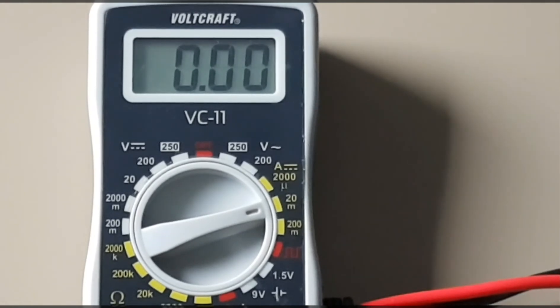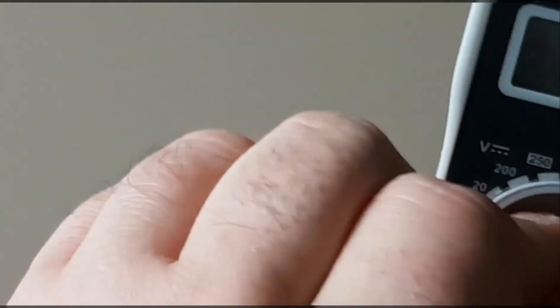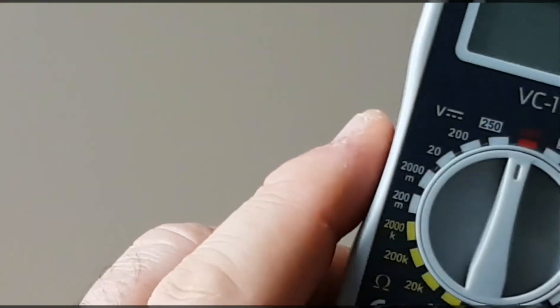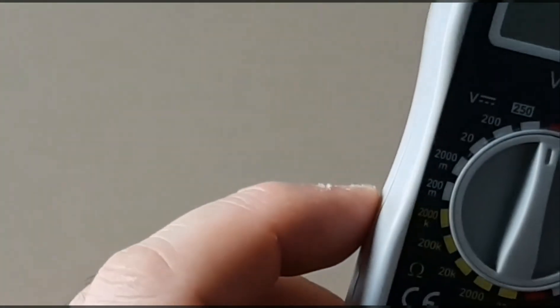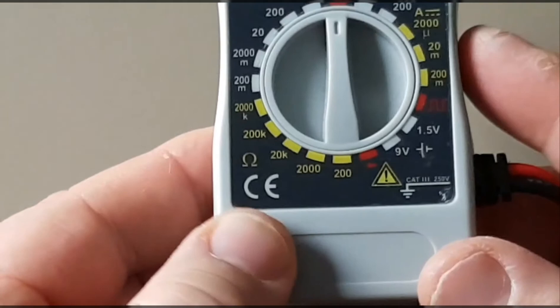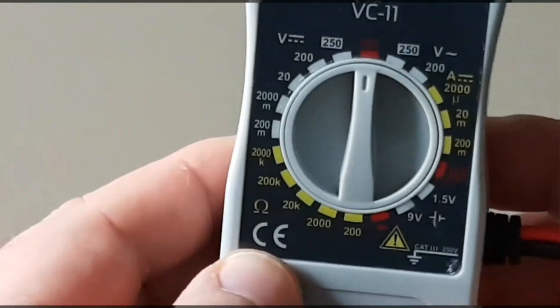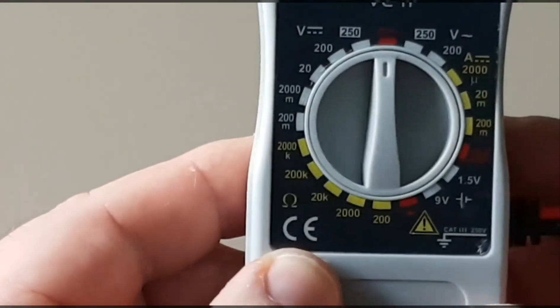Now the Voltcraft VC11 also does direct current amp measurements from 2000 microamps to 200 milliamps with a plus minus 2.5% and once again a 9 count in terms of accuracy. I don't know how many people that actually buy this would go ahead and measure current with it, but you have a little bit of a window there if you need to do that. It has the CE standard.